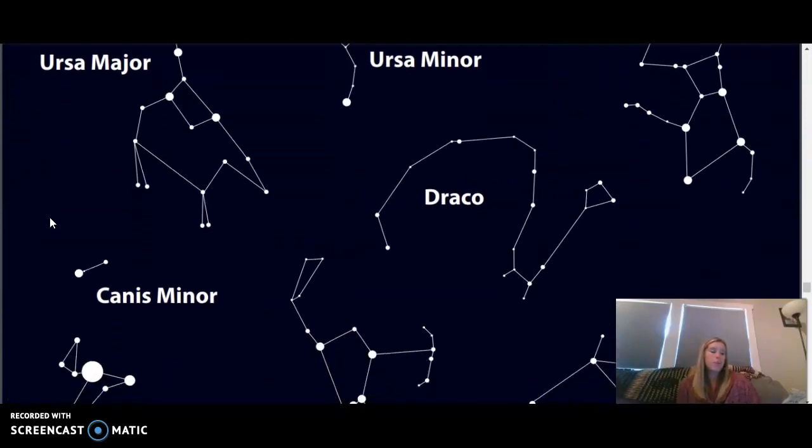Since ancient times, people have grouped the stars into patterns called constellations. Ancient civilizations saw these constellations as figures of people, animals, and objects. They played connect the dots with the stars by drawing imaginary lines between them to form pictures in the sky.